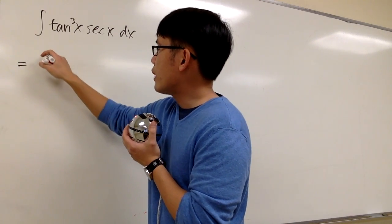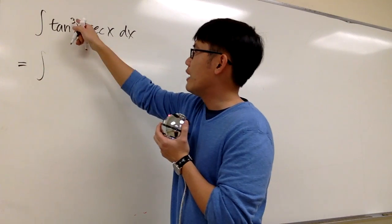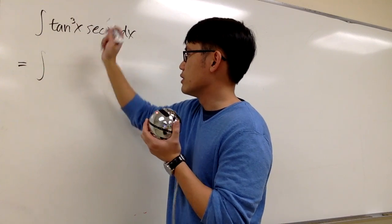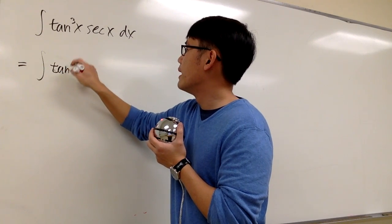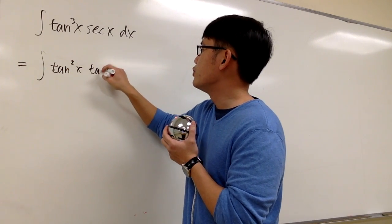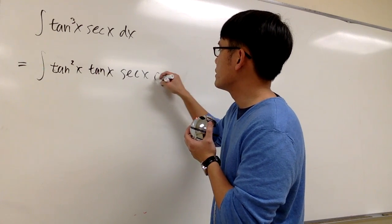We can only try to deal with tangent to the even number power. Here we have tangent to a third power, so let's break it apart. Tangent squared x times tangent to the first power x, and then we have the secant x right next to it.